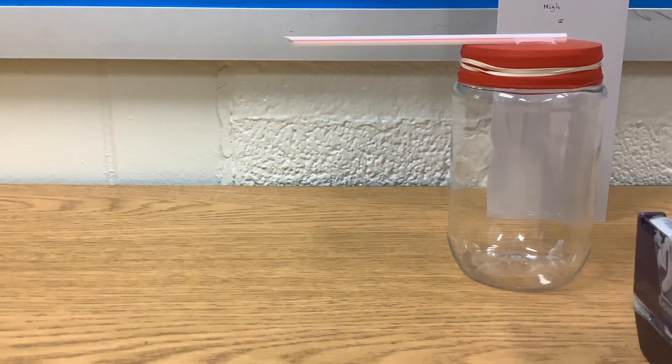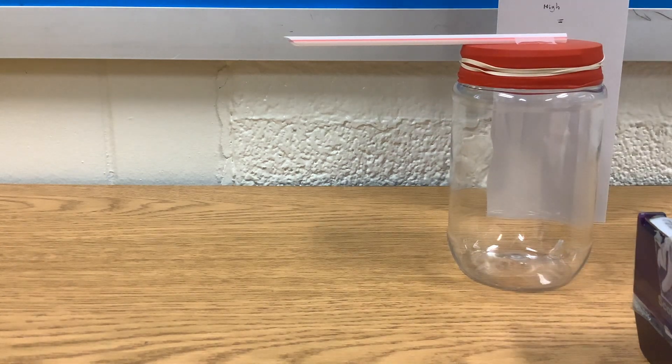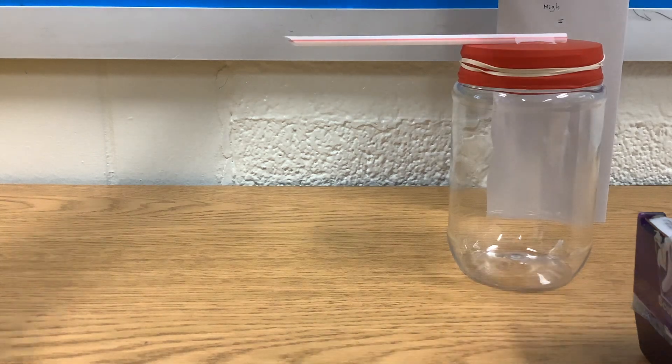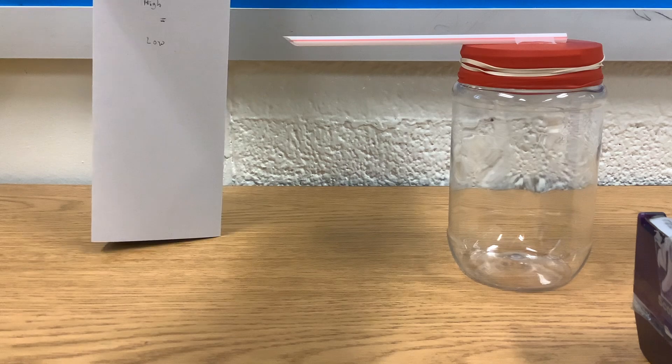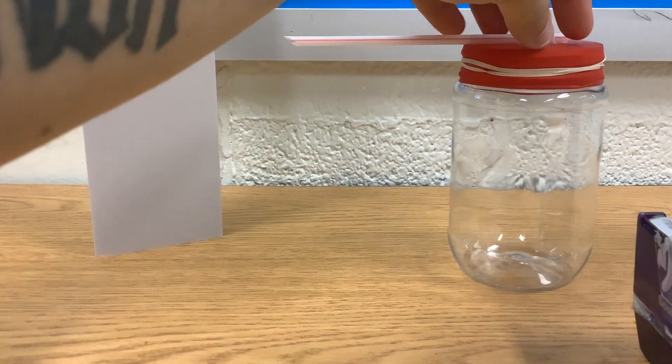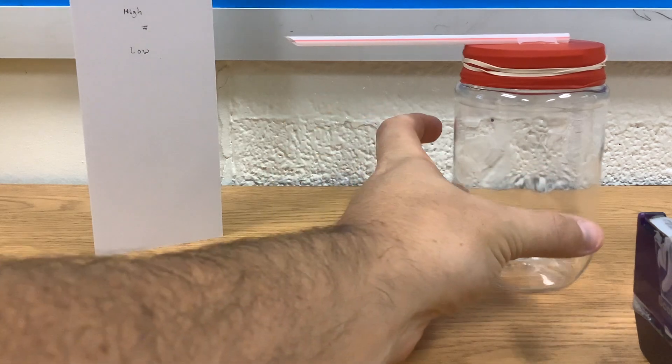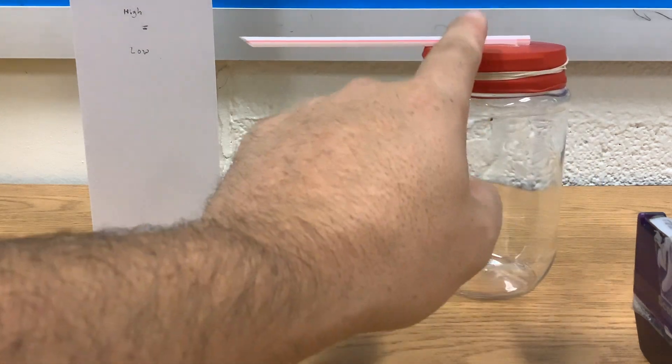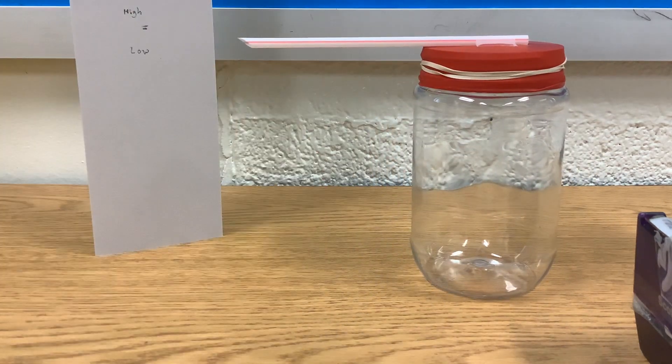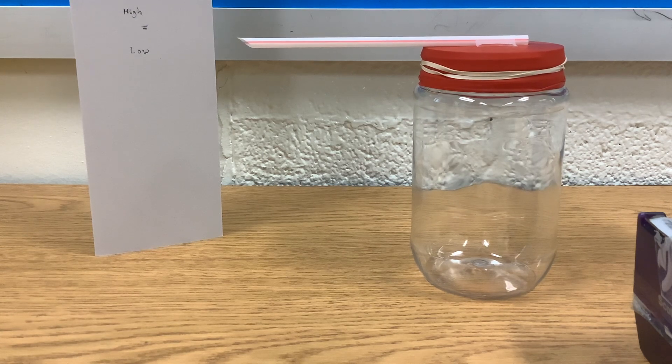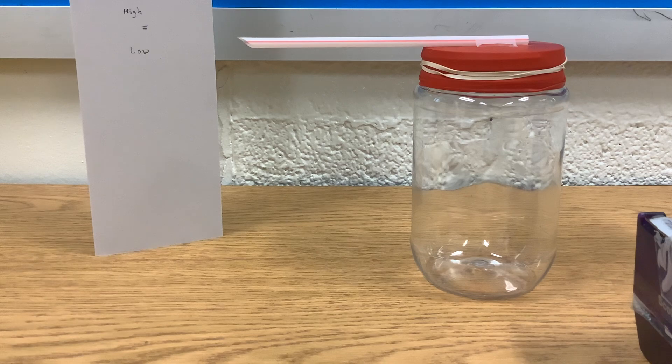So as our air pressure changes around the jar, we're going to see this balloon is either going to swell and bulge because this air is going to be at a higher pressure inside the jar. And we remember that air wants to go from areas of high pressure to low pressure. Mother nature wants to keep everything nice and equal, keep it the same.